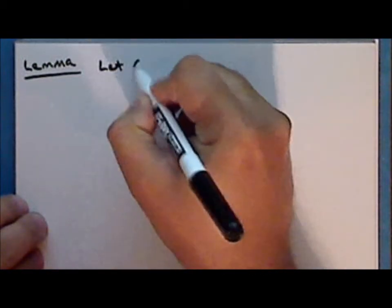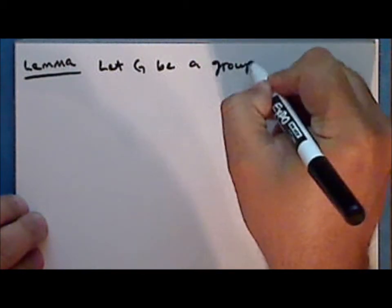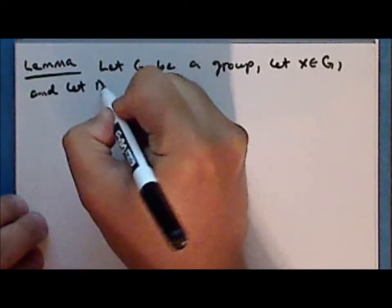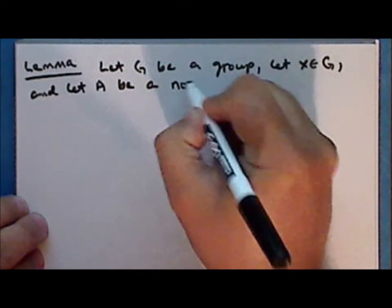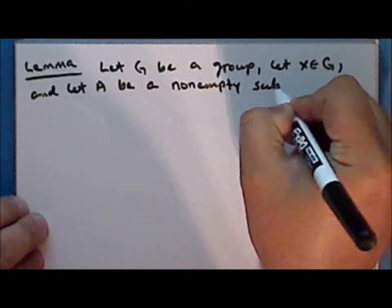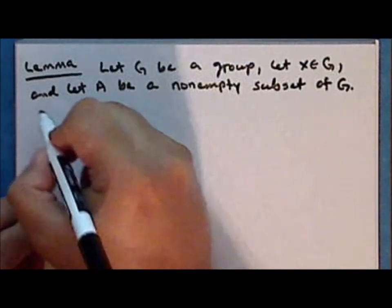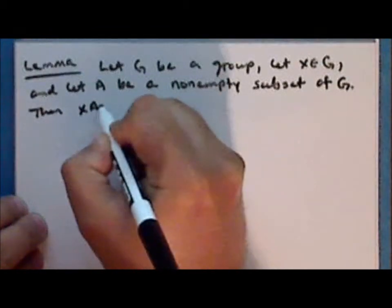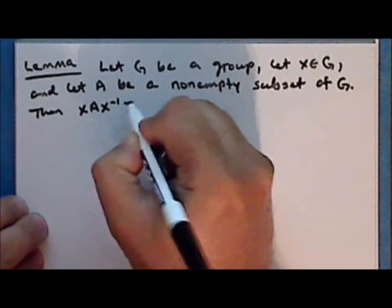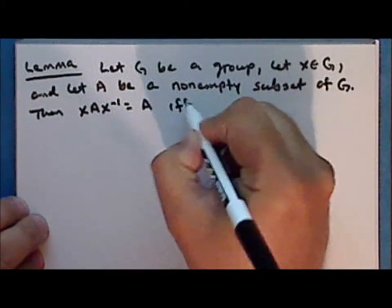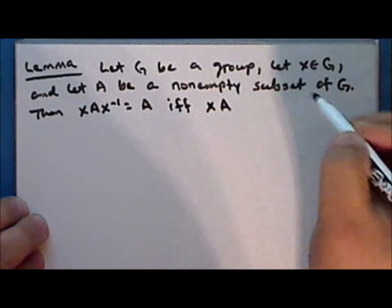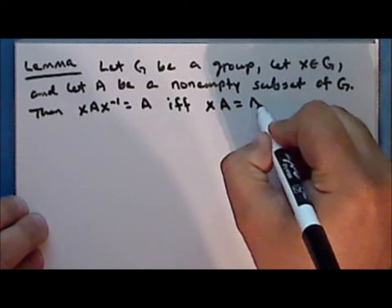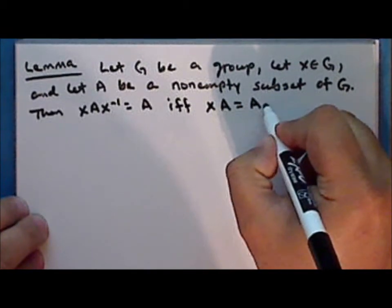We'll start with the first exercise from the previous lecture and prove it as a lemma. Let G be a group, let X be an element in the group, and let A be a non-empty subset of G. Then the set of conjugations of the elements in A by X equals the set A if and only if the set obtained by multiplying each element in A on the left by X equals the set obtained by multiplying each element in A on the right by X.